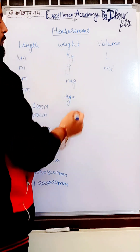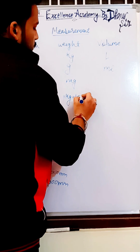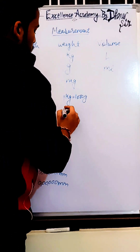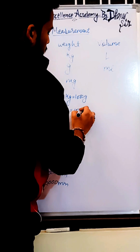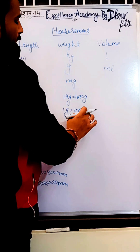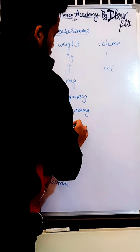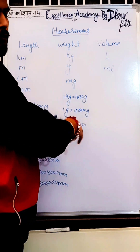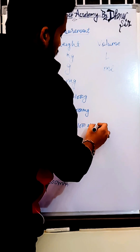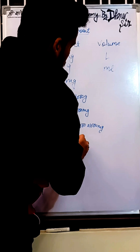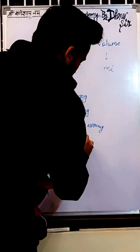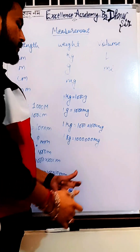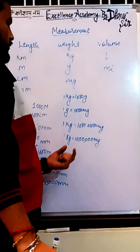Now let's come to weight. One kilogram equals how many grams? It is 1000 grams. Now we will change this gram into milligram — one gram equals 1000 milligrams. So in one kg, we write 1000 and multiply by 1000. The answer is 1 kg equals 10 lakh milligrams. No doubt in this.